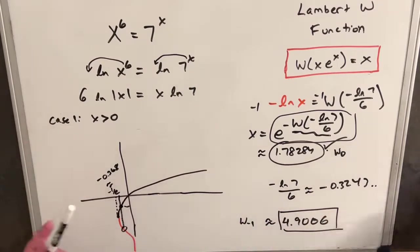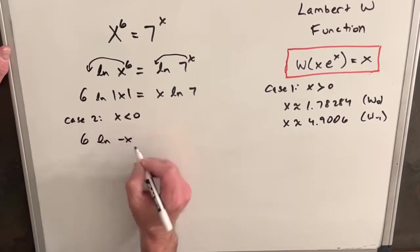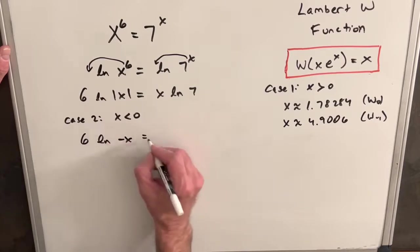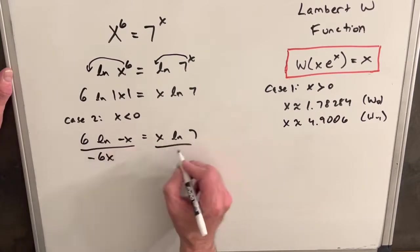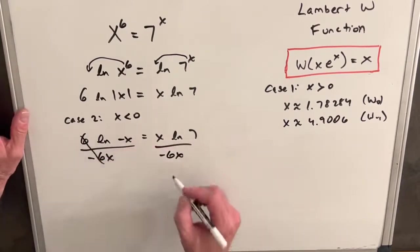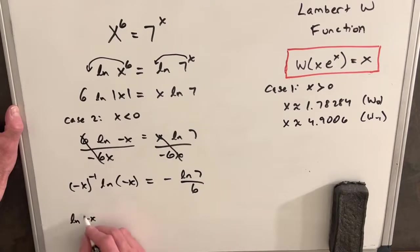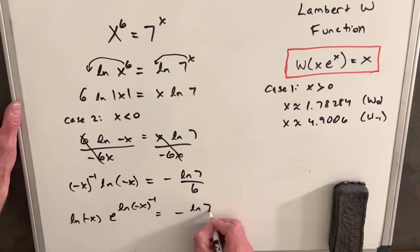Now let's look at Case 2: x is less than zero. We rewrite this as 6 ln(−x), which keeps the argument of the log positive, equals x ln 7. We do the same steps as before, but now divide by −6x. The 6s cancel on the left, and the x's cancel on the right. We rewrite ln(−x) and introduce e using the same trick, getting e^{ln(−x)^{−1}} = −ln 7 / 6.